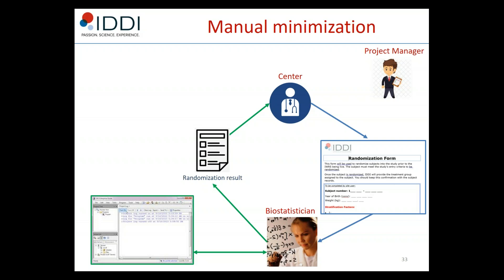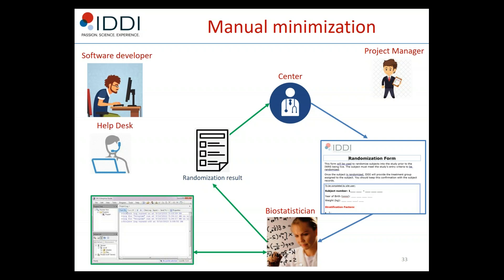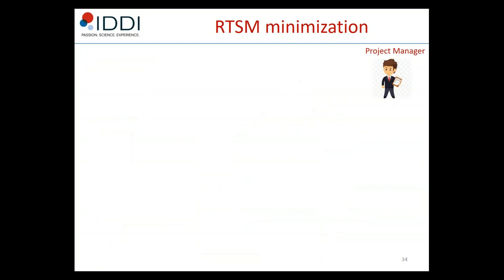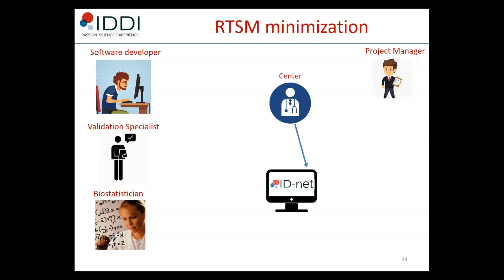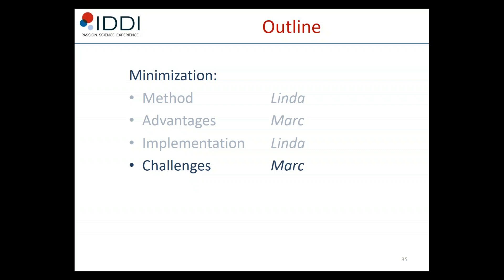Ideally, no manual procedure is necessary and the process is much simpler. The software developer, validation specialist, and biostatistician prepare the system. Once a center is ready to randomize a patient, they log into the system and immediately get the treatment result. As part of a validated RTSM system developed with statistical expertise, minimization can be a very straightforward procedure to implement and use.